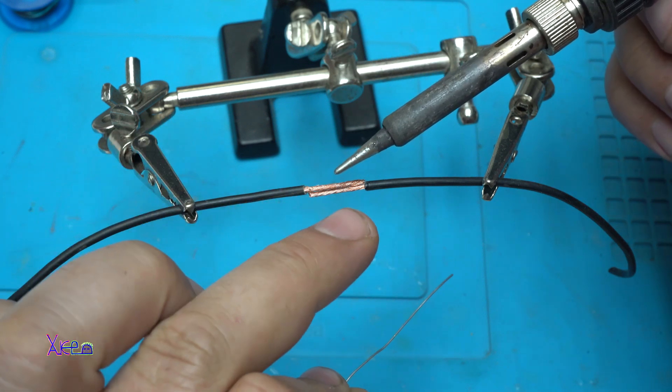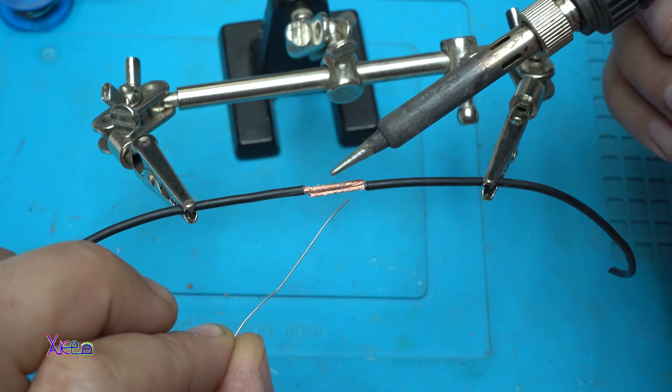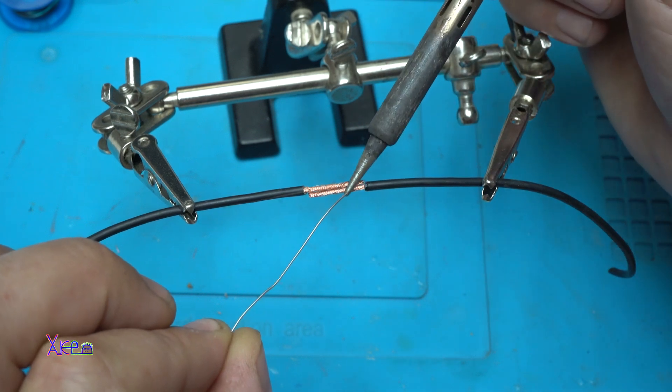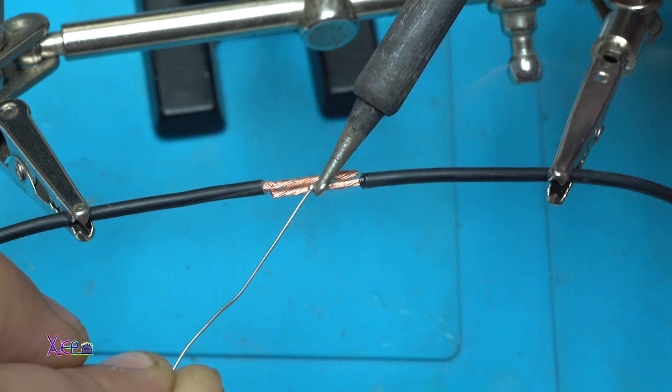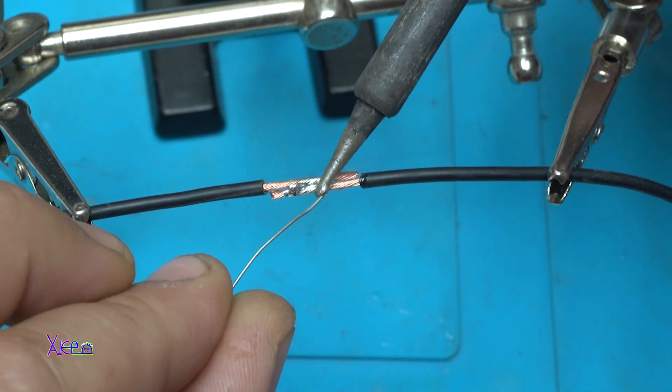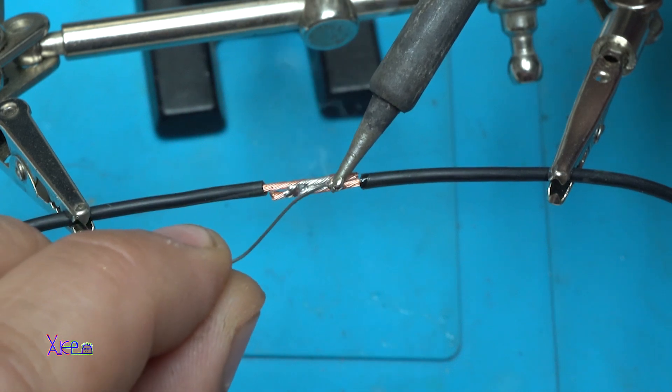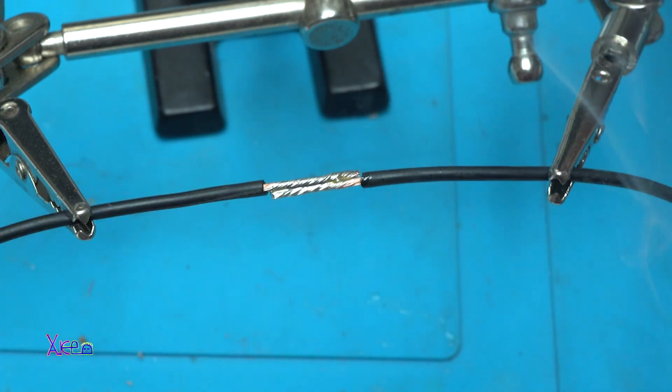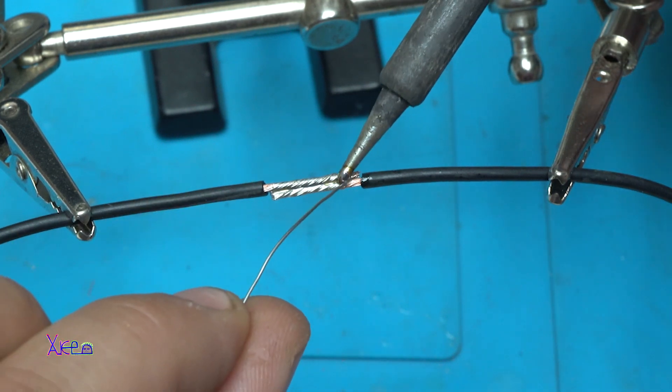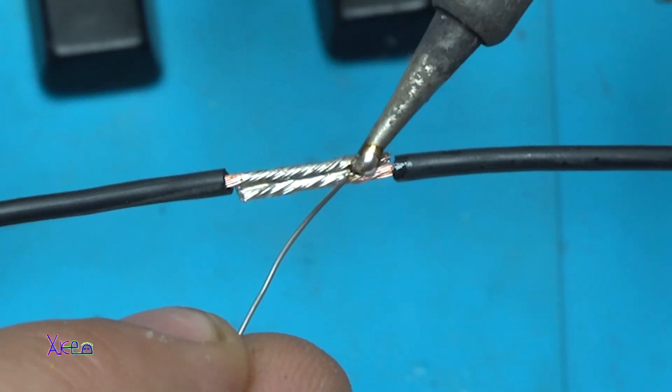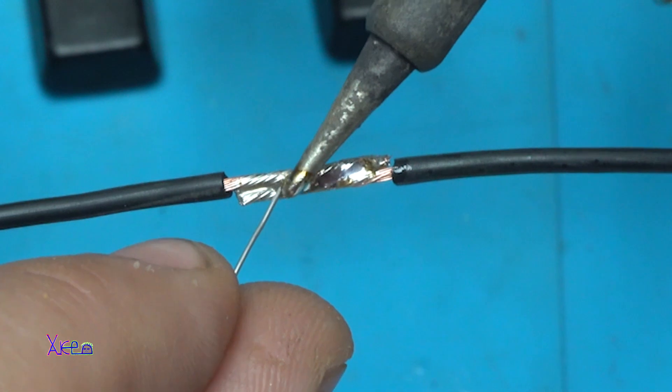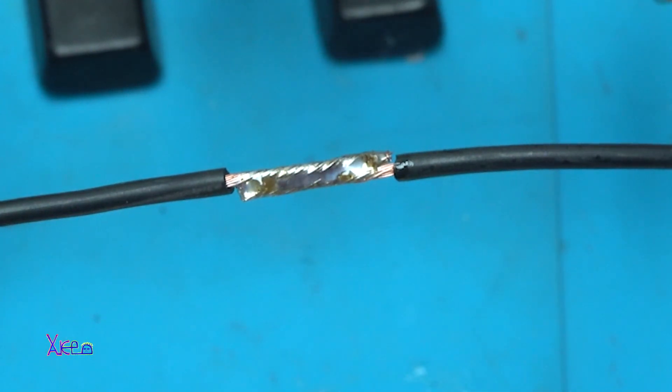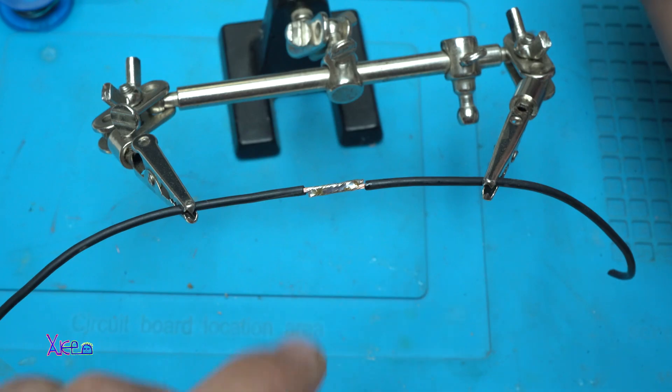And the next step, with clean soldering tip, first you warm the wires, then you add the soldering tin. Look, perfect. Perfect. You need to practice a couple of times. And if you are not sure you can add just more tin. Here it is. Perfect soldering wires.